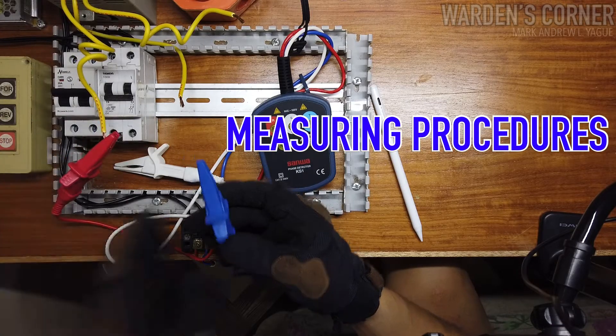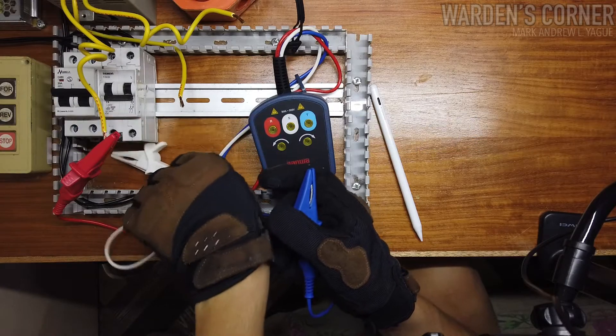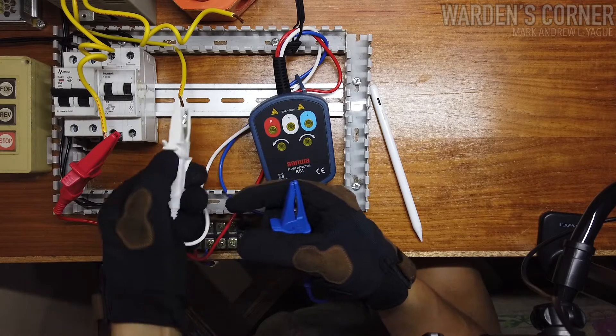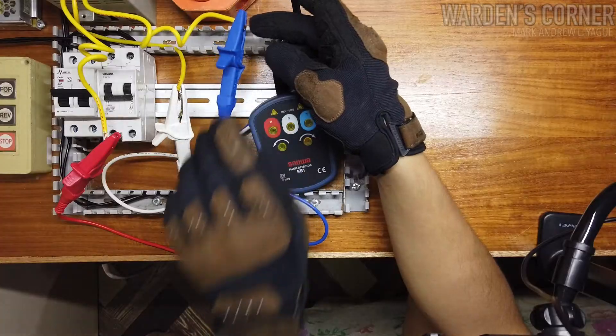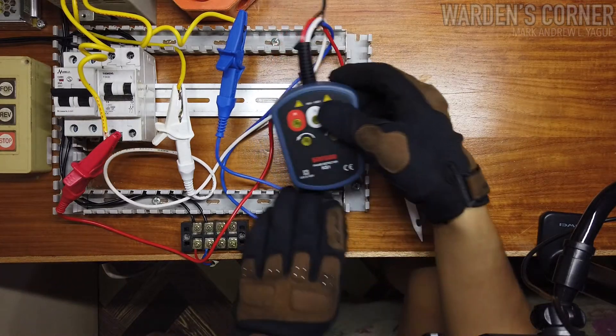Steps in using our three-phase detector. First, connect the alligator clips to three-phase input terminals by RST or line 1, line 2, line 3.